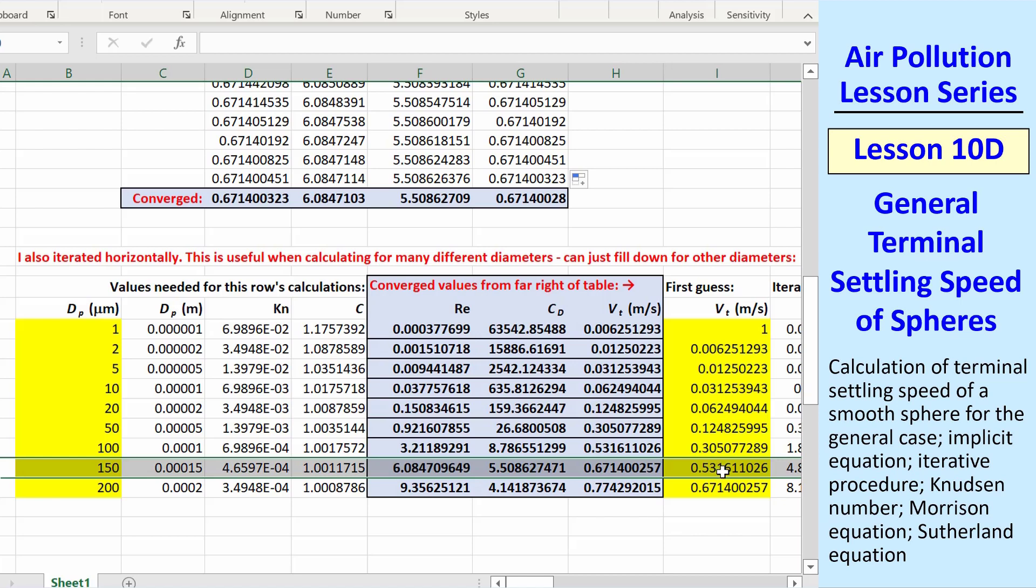But my actual iteration starts here. In this case, my first guess was the converged value from the previous diameter, since that should be fairly close as we increment dp. The first time, however, I entered some number.